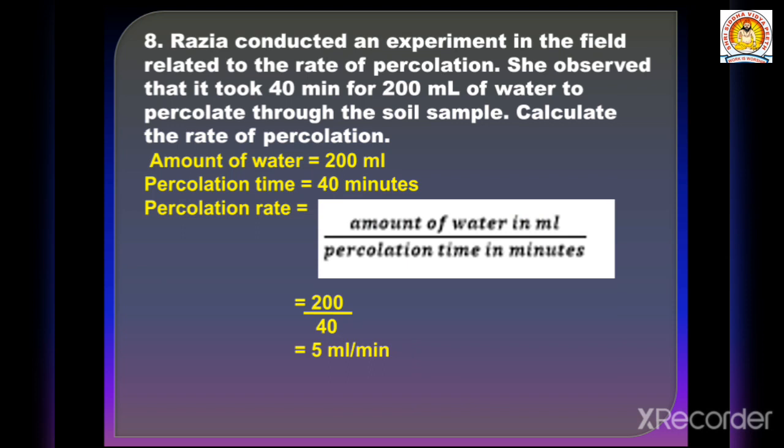Question number 8: Razia conducted an experiment in the field related to the rate of percolation. She observed that it took almost 40 minutes for 200 ml of water to percolate through the soil sample. Calculate the rate of percolation. The percolation rate is calculated as the amount of water in milliliters divided by the percolation time in minutes.